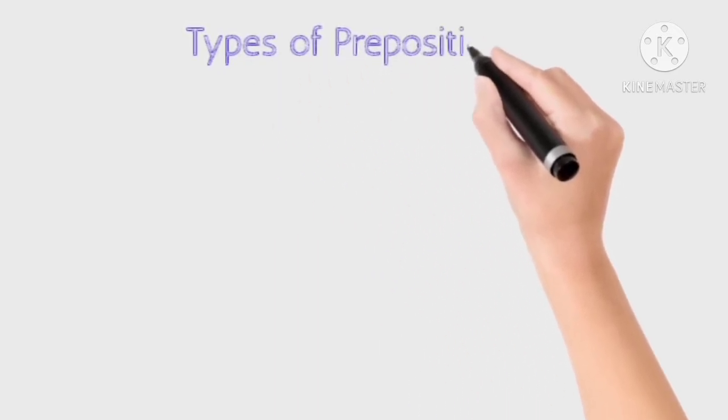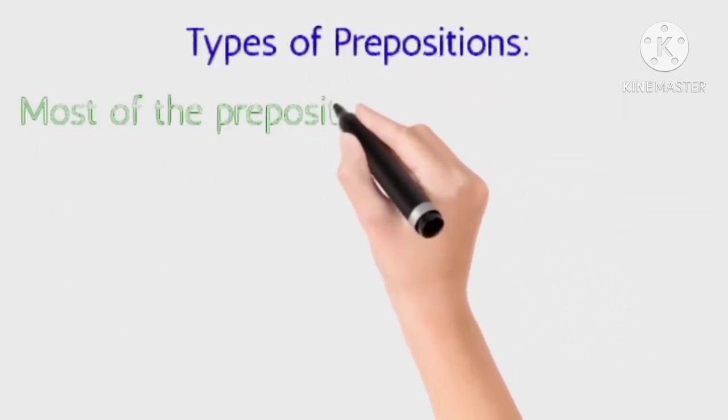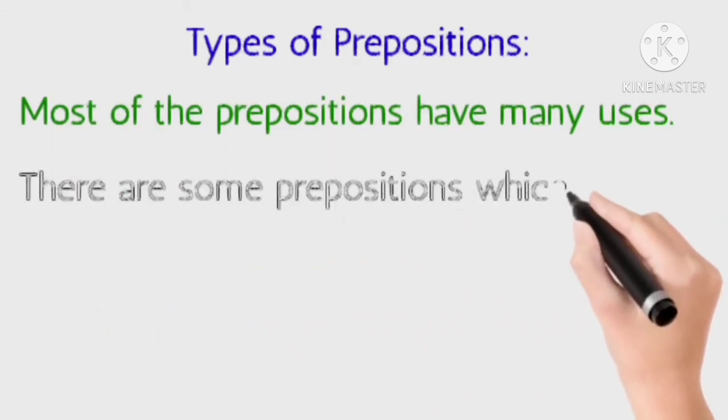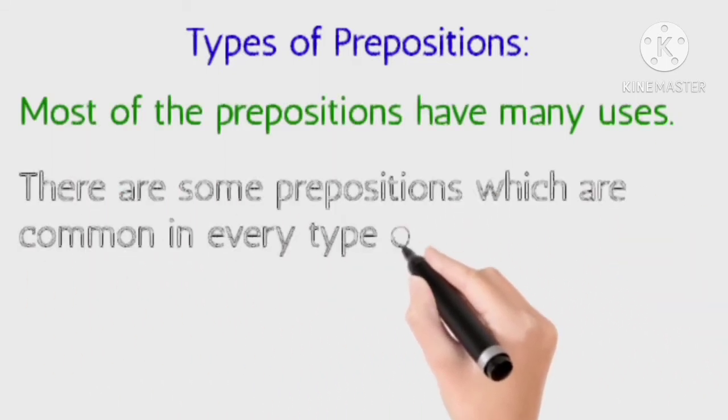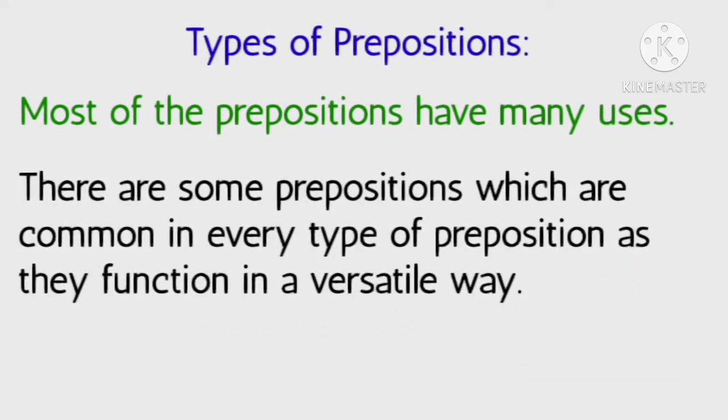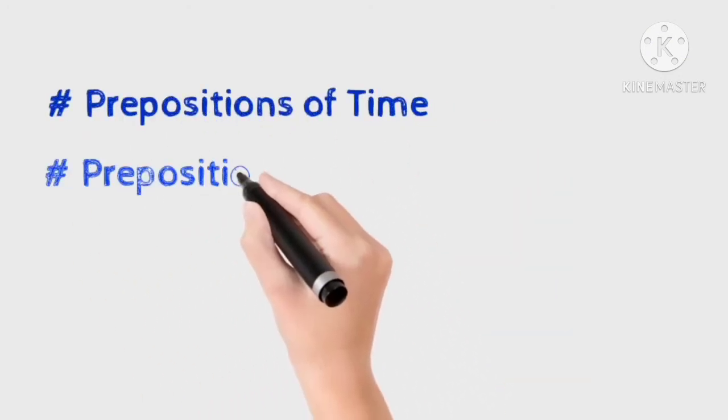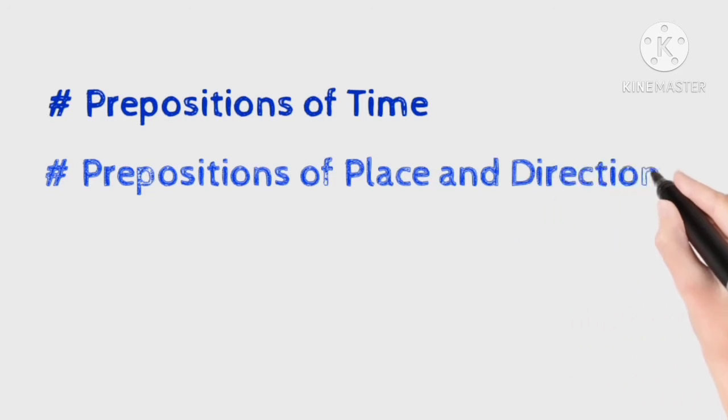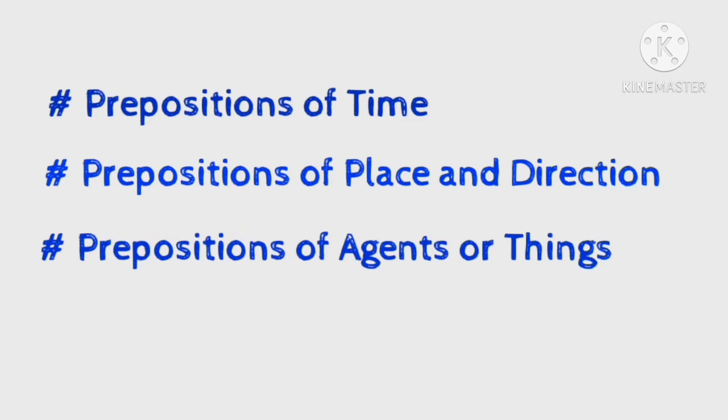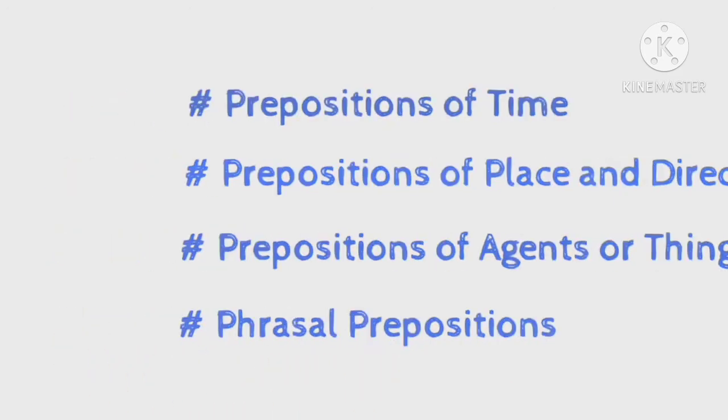Let us now move on to types of prepositions. Most of the prepositions have many uses. There are some prepositions which are common in every type as they function in a versatile way. The first one is preposition of time, then prepositions of place and direction, then prepositions of agents or things, and the last one is phrasal prepositions.